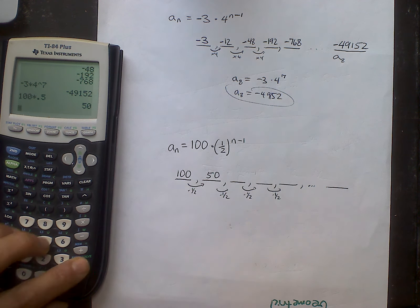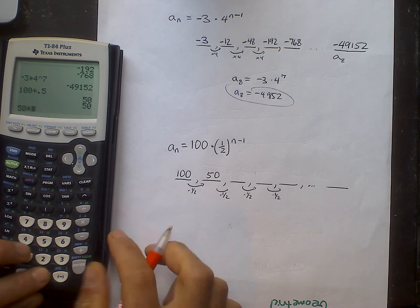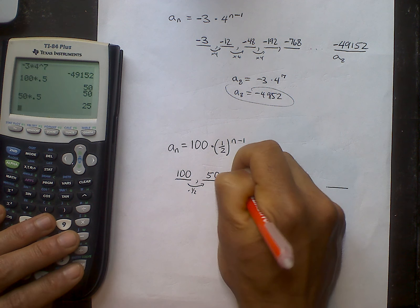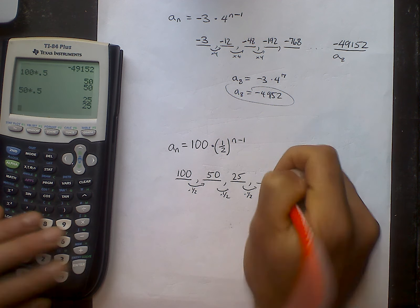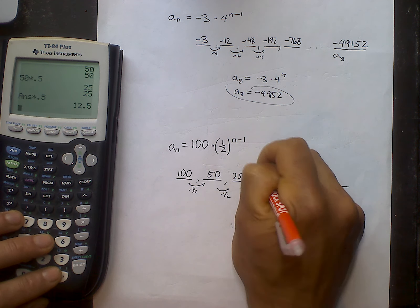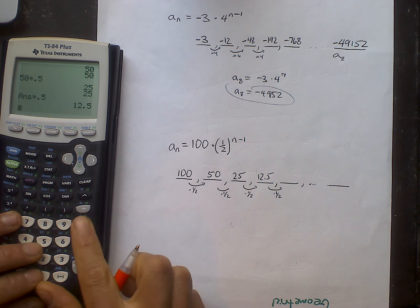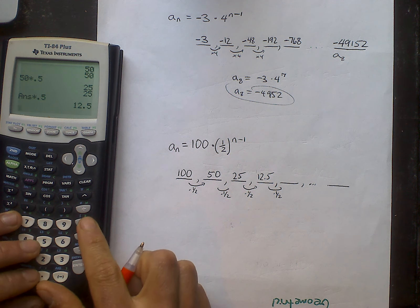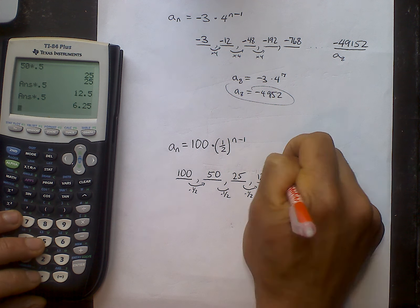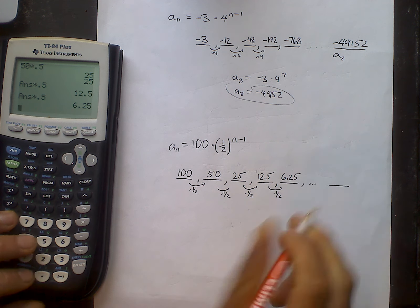So 100 times 0.5 is 50. Which is going to be 25 next. 50 times 0.5 is 25. Times 0.5 again. 12.5.